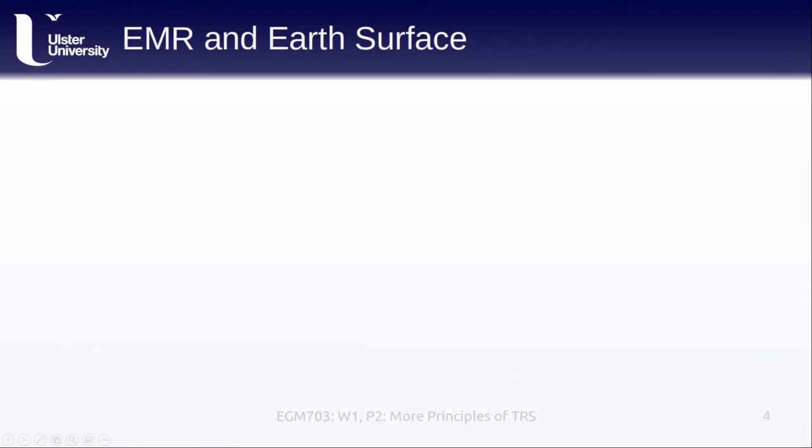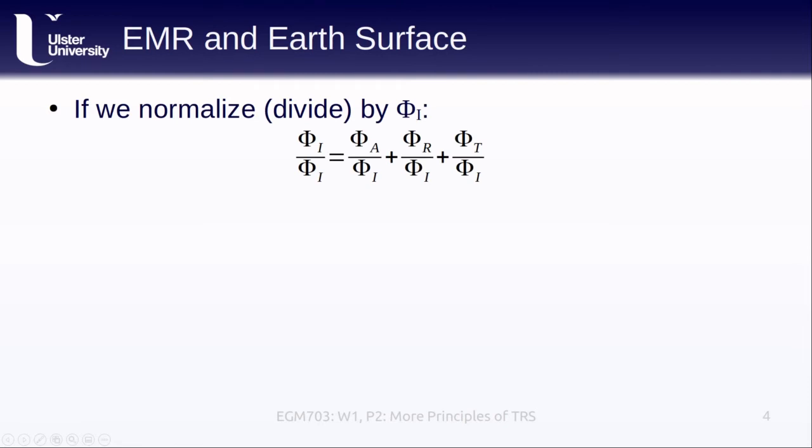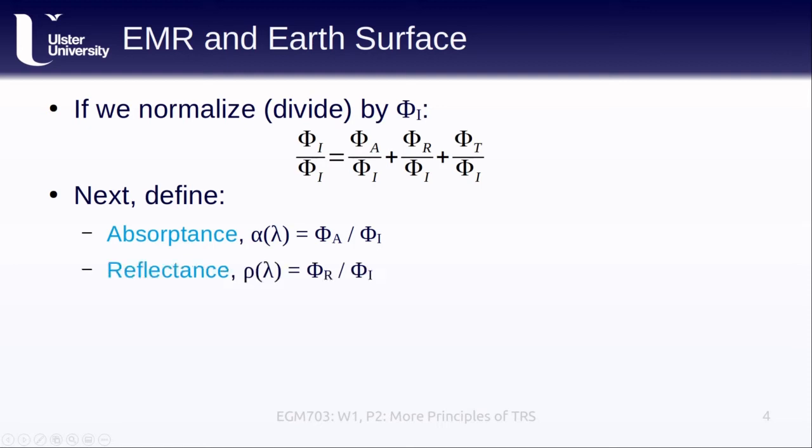Taking the equation from the previous slide, we can normalize or divide this by the incident radiant flux, phi sub i. We can then define the following. The absorptance, alpha, here the lambda in parentheses denotes that this varies with wavelength, it's a function of wavelength. This is the ratio of the radiant flux that is absorbed to the incident radiant flux. This, of course, should be very familiar to you by now, because we've used it in a number of the previous modules. Finally, the transmittance, tau of lambda, is the ratio of the radiant flux that is transmitted through the material, or the surface, or the object, to the incident radiant flux.